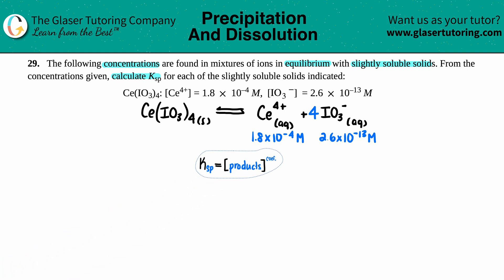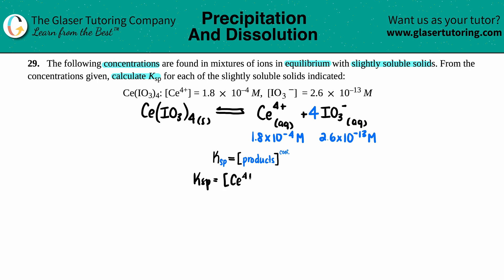Now let's use the balanced equation to find the specific Ksp expression. Remember, it's just equal to the products raised to the coefficients. So Ksp equals the concentration of Ce4+ times the concentration of IO3-, raised to their coefficients. I didn't see a number in front of Ce, so there was one of them — no exponent needed. But the IO3- has to be raised to the fourth. So Ce4+ was 1.8 times 10 to the negative fourth, and IO3- was 2.6 times 10 to the negative 13th, raised to the fourth.